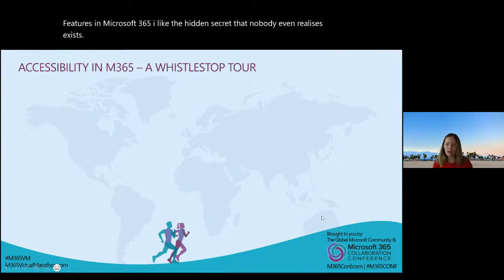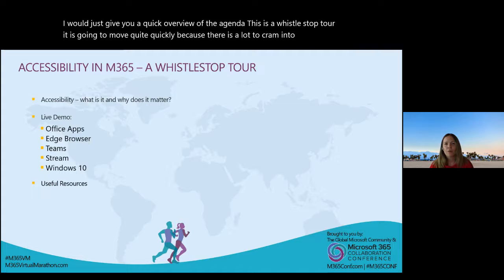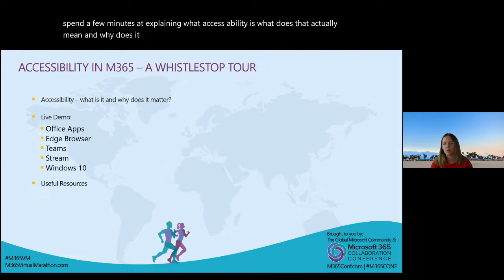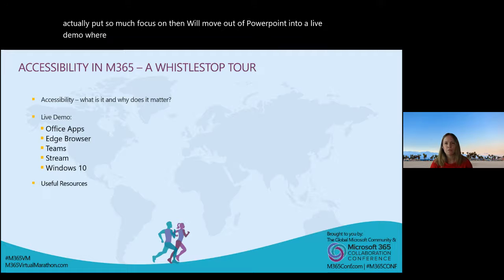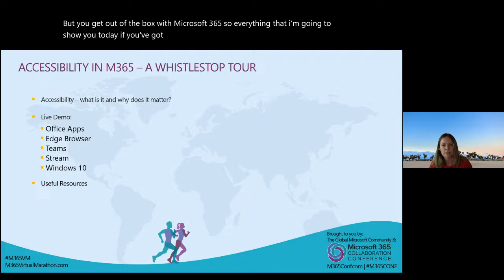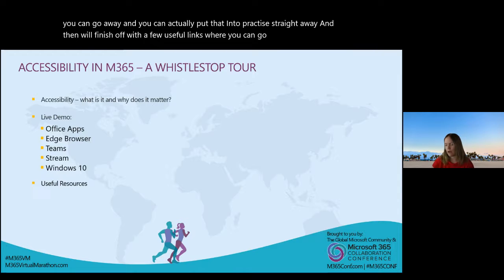What I've found over the last couple of years is that the accessibility features in Microsoft 365 are like the hidden secret software that nobody even realises exists. So I'll give you a quick overview of the agenda. This is a whistle stop tour — it's going to move quite quickly because there's a lot to cram into the 50 minutes we've got. Before we start with the live demo, I want to spend a few minutes explaining what accessibility is, then move into a demo of features and functionality out of the box with Microsoft 365, and finish with some useful links.